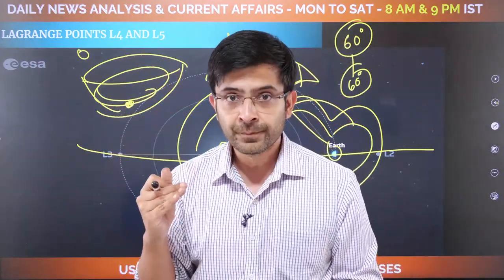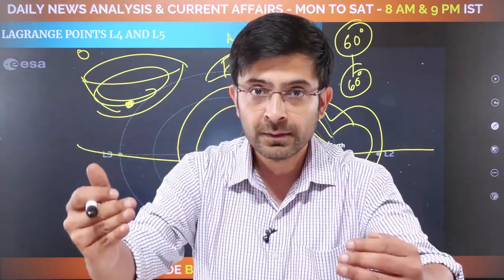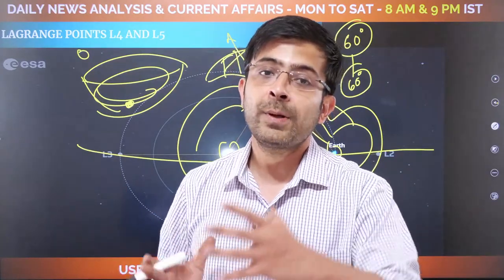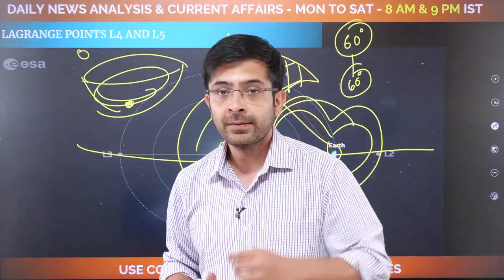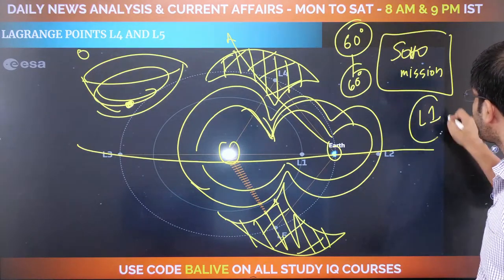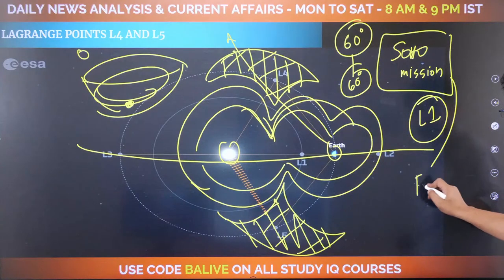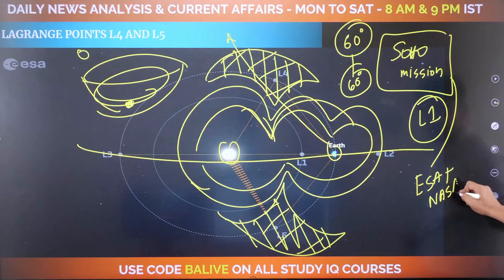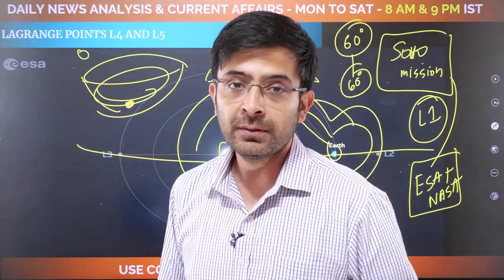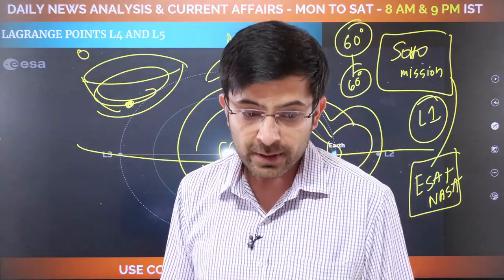India is now looking to join the SOHO club by sending its own solar mission to study the sun up close. We will do an extensive class on the seven payloads, including the VELC which deserves thorough analysis. You also need to understand coronal heating, coronal mass ejection, and the dynamics of space weather. Today, focus your understanding on L1 to L5. PSLV is the launch vehicle being used to transfer Aditya L1 to the L1 orbit.